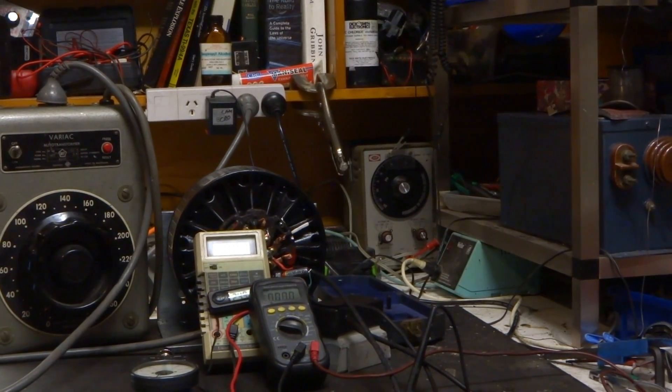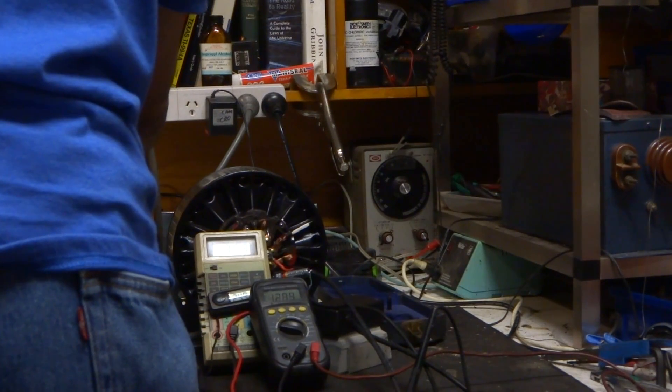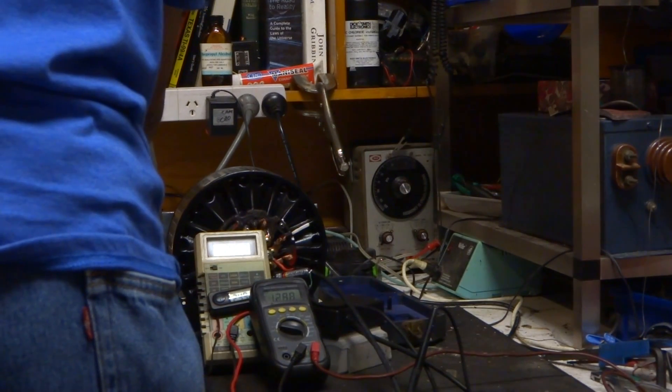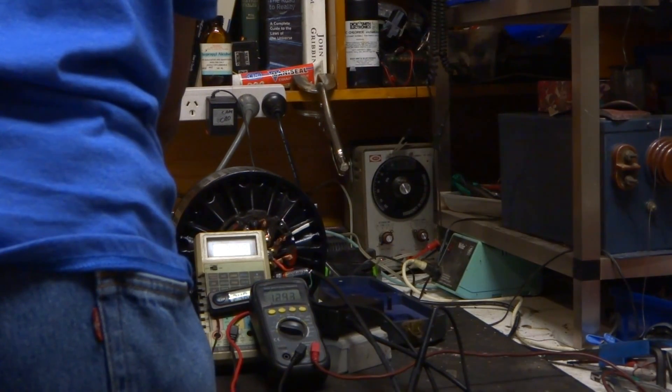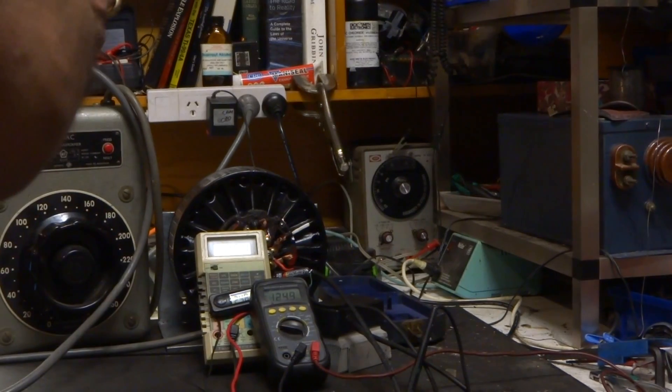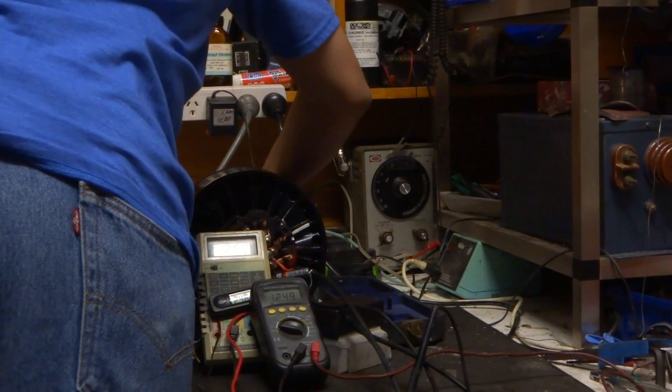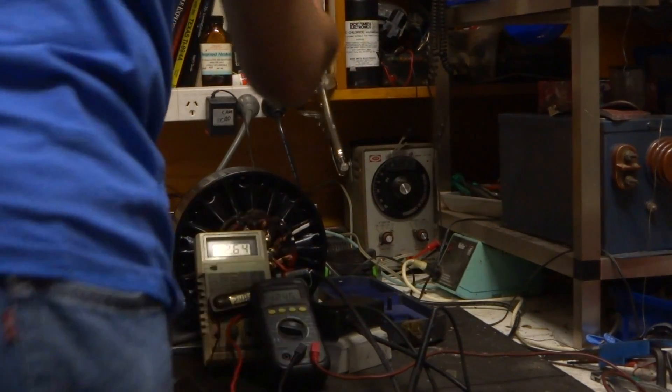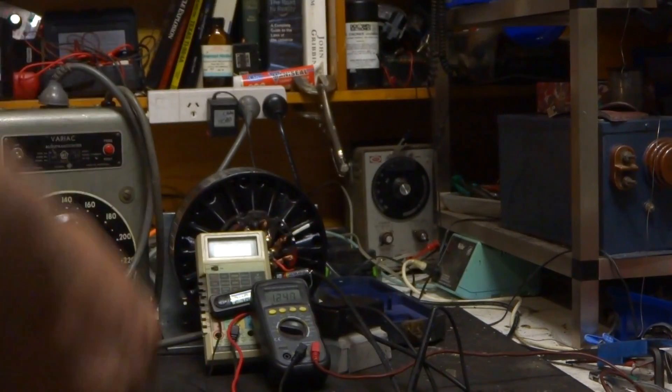Okay, doing some initial tests on the Agni motor. At around 12 volts, we're drawing about 2.5 amps and close to 900 RPM, which is about right for this.